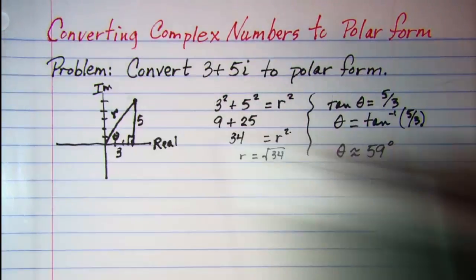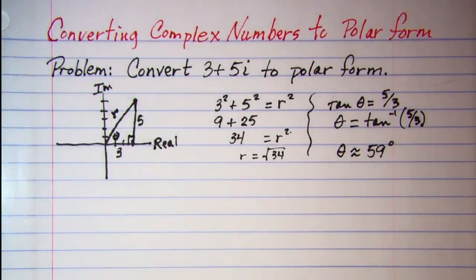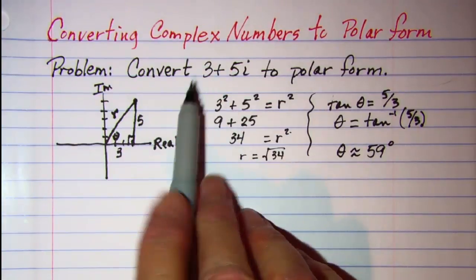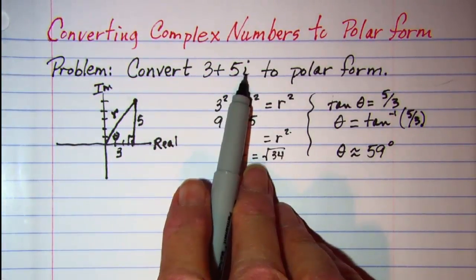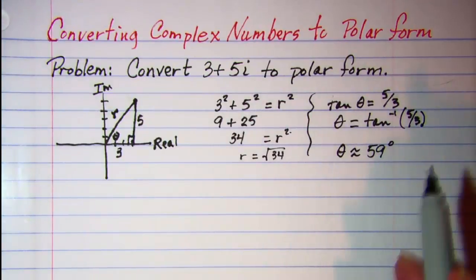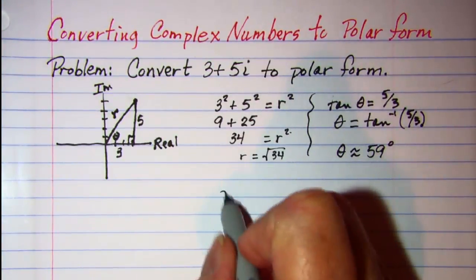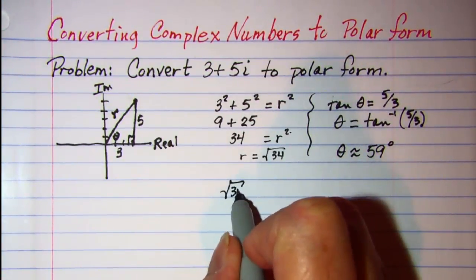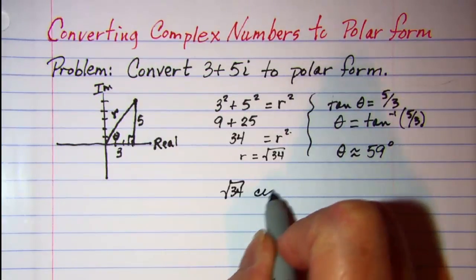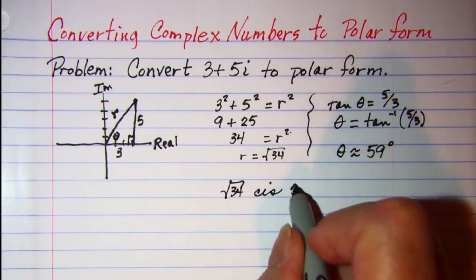So when we write our complex number in polar form we can write that as root 34 cis 59 degrees.